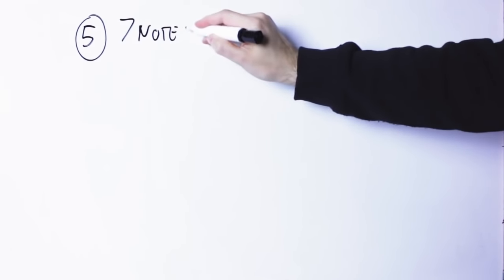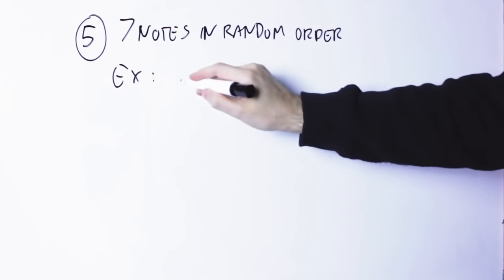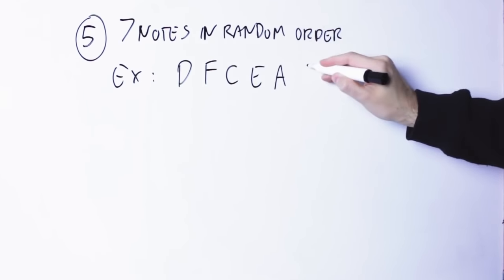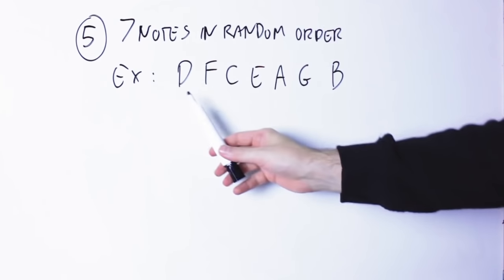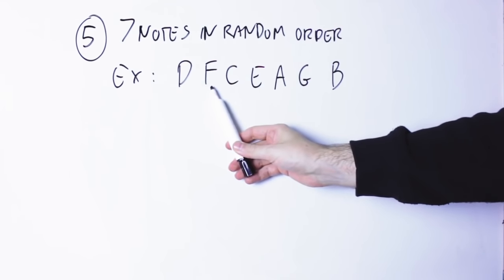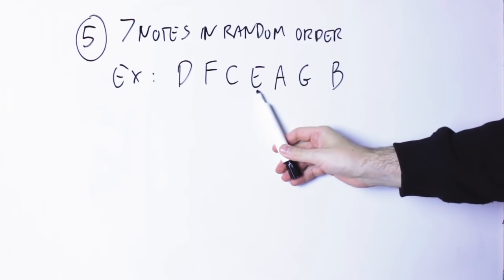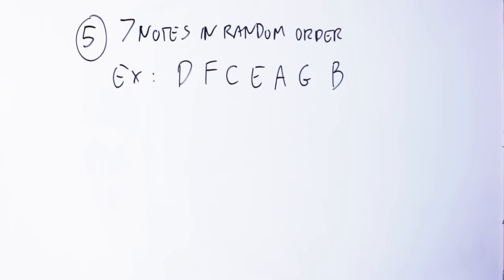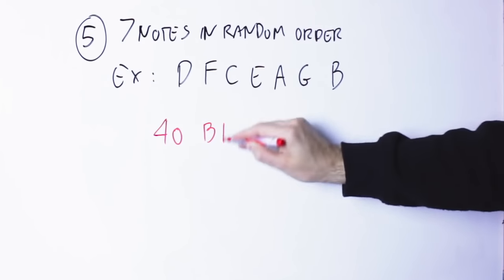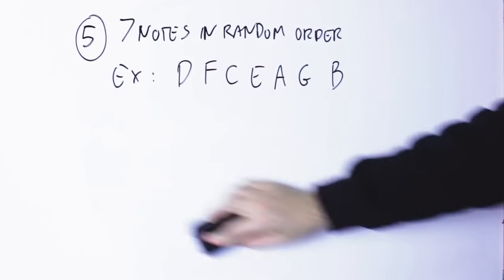When this starts to feel easy, then you go to exercise number five. In exercise number five, we write down all the natural notes in a random order. For instance, I could write them this way: D, F, C, E, A, G, B. Then always with a metronome at 40, I'm gonna play the first note D going up, the next note F going down, the next note C going up, the next E going down, the next A going up, G going down, B going up, again without stopping when you change the note. One note per beat, never stop.